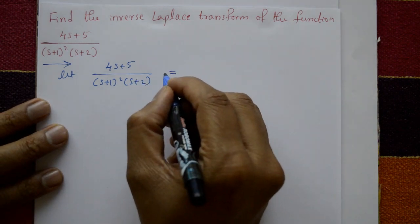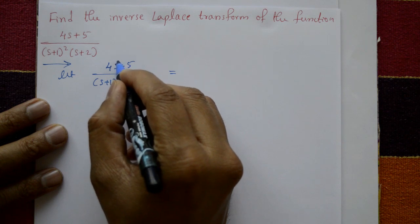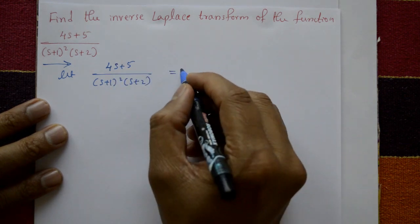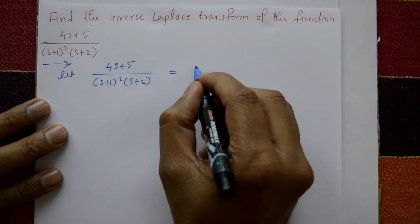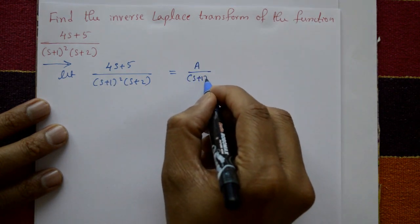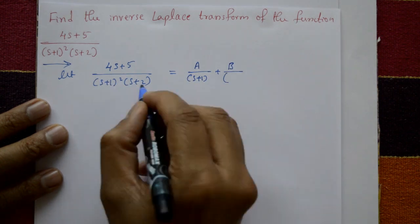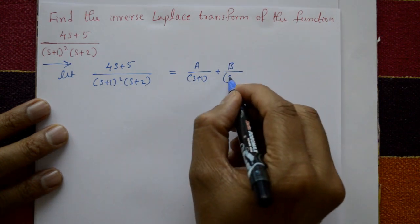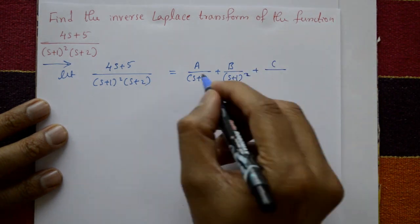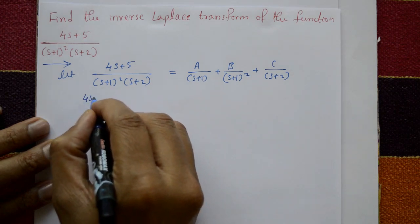Using the partial fraction method, this is a proper fraction — the degree of the numerator is 1 and the degree of the denominator is 3. So we write: A upon (s + 1) plus B upon (s + 1) whole square — since this bracket is repeated — plus C upon (s + 2).